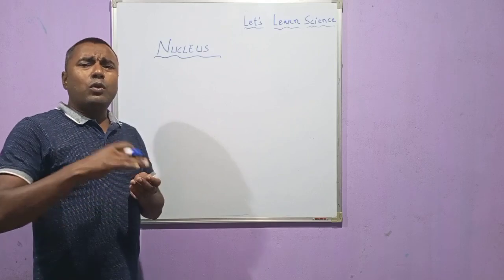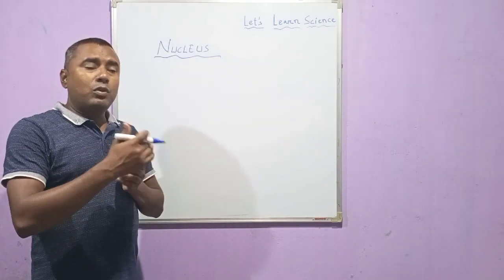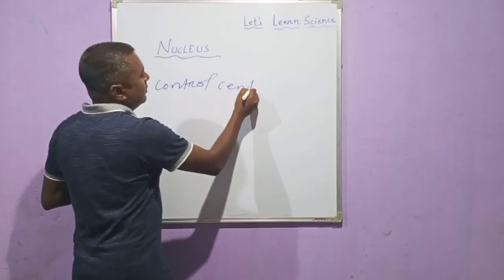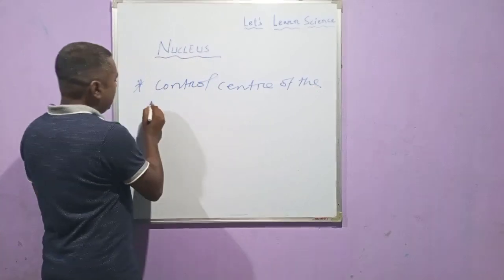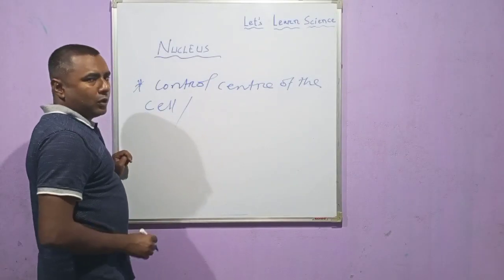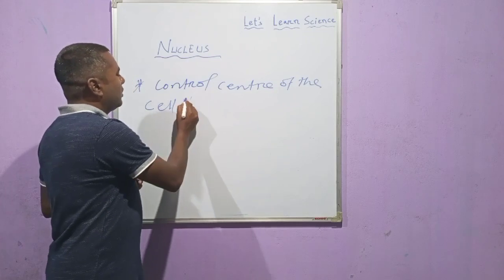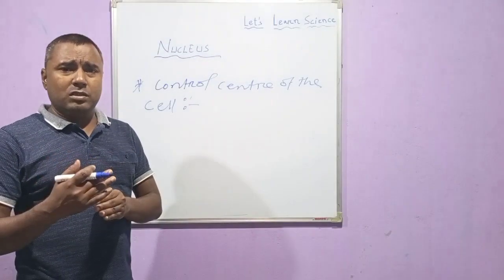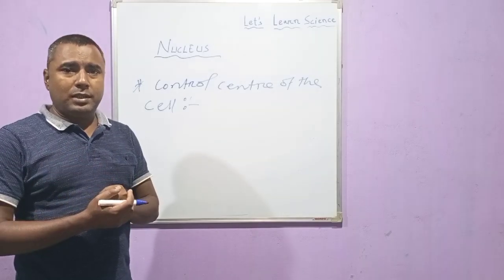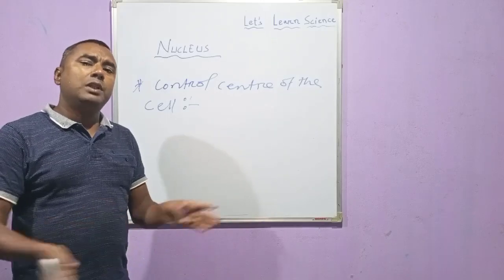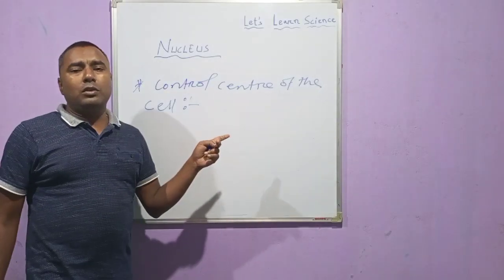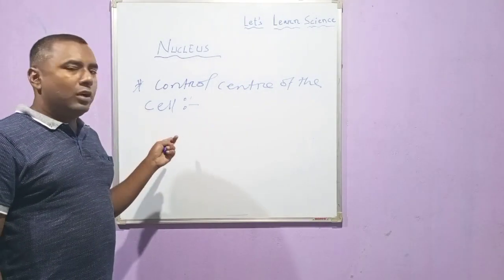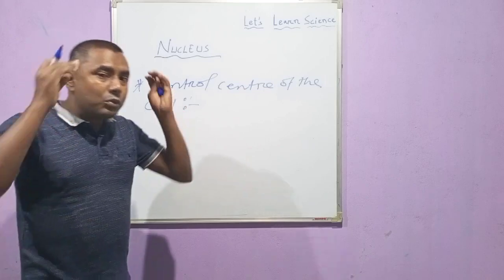The nucleus is called the control center of the cell, or you can also call it the headquarter of the cell. It is called the control center because it gives direction for all the activities of the cell. All the different types of activities that have to be performed in the cell — that direction is given by the nucleus.